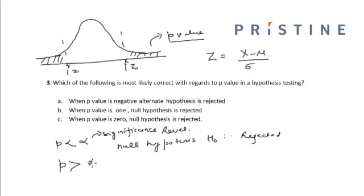Whereas if p value is greater than alpha, then my null hypothesis is accepted.